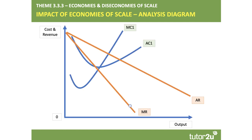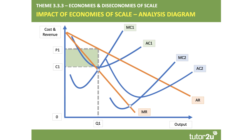Here's one way of showing it using a diagram. We start with an initial set of cost and revenue curves — MC1, AC1, AR and MR. The profit-maximising output is Q1, where marginal cost meets marginal revenue, with price P1 and average cost C1. If there are big scale economies, you move to a much lower set of cost curves — MC2 and AC2 — reflecting increasing returns to scale and large-scale production.